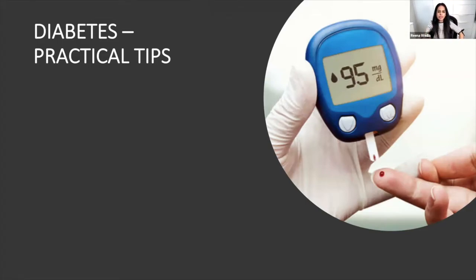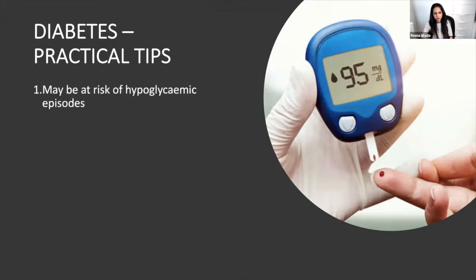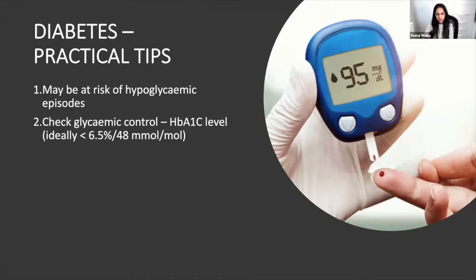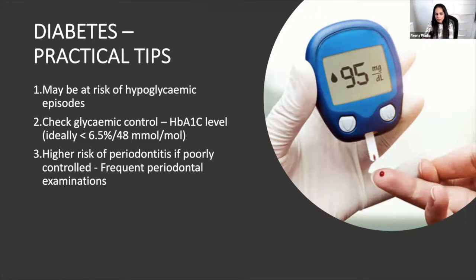With diabetic patients, remember they're at risk of hypoglycemia — if you're doing half-mouth treatment, see them at the beginning of the day after breakfast or after lunch. Check their glycemic control. If uncontrolled, they're at higher risk of perio and may need to be seen more frequently. Their treatment may not work as well if diabetes isn't controlled, but that doesn't mean you won't treat them — control of diabetes must be part of the treatment plan.